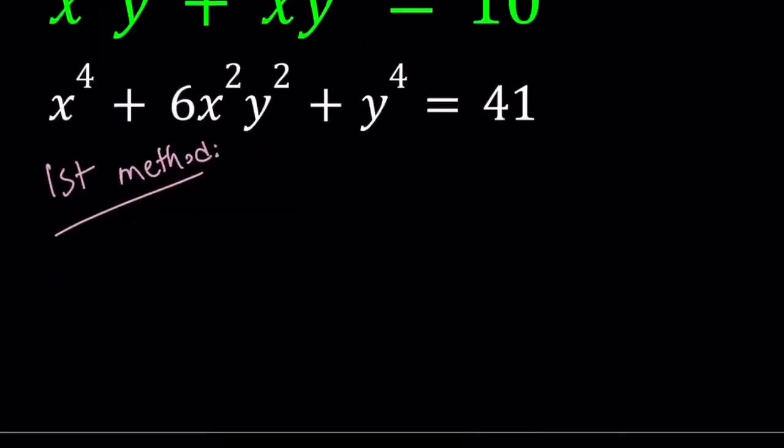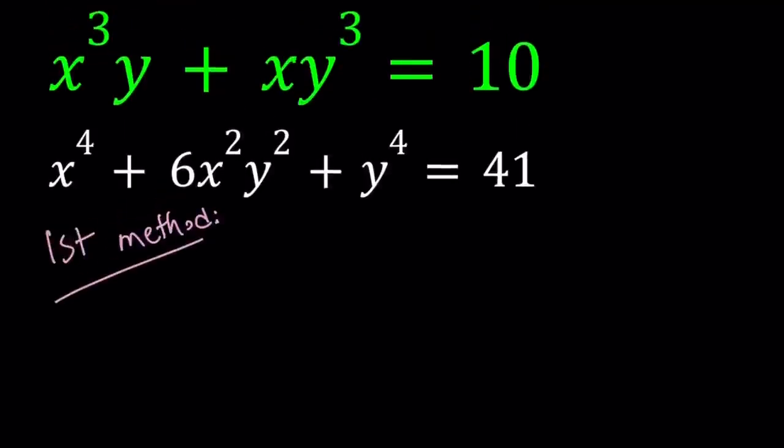My first method is like no pain no gain. First of all, I noticed that this is a homogeneous system. When you look at these terms, you notice that x³ is multiplied by y. That makes a fourth power. xy³ makes a fourth power. So everything here makes a fourth power in terms of variables.